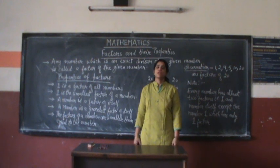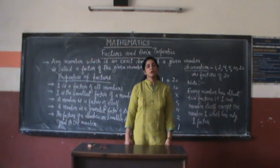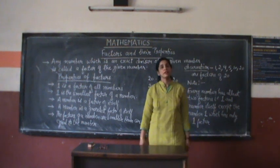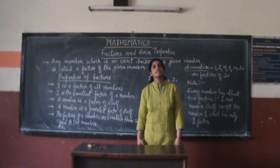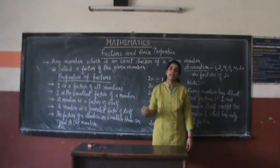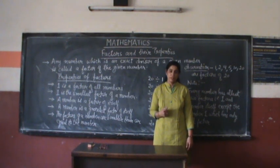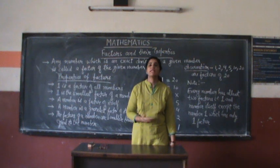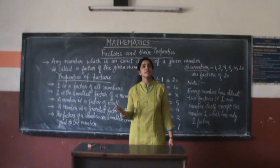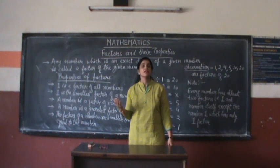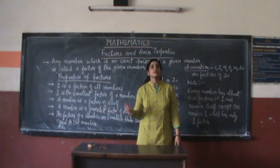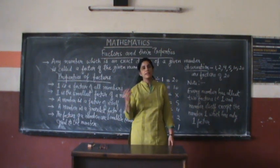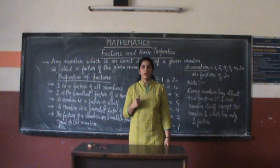Good morning students. Today you are going to learn about the concept of factors and their properties. A factor is said to be an exact divisor of the given number, which means that when you divide a number by another number and it leaves no remainder — that means remainder is zero — then we say that divisor is called the factor of that given number. Let us understand through an example.